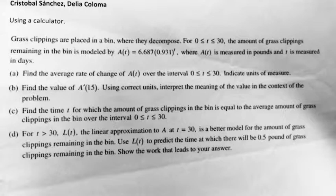Part D. For t is greater than 30, L, the linear approximation to a of t at t equals 30, is a better model for the amount of glass clippings remaining in the bin. Use L to predict the time at which there will be 0.5 pounds of glass clippings remaining in the bin. Show the work that leads to your answer.